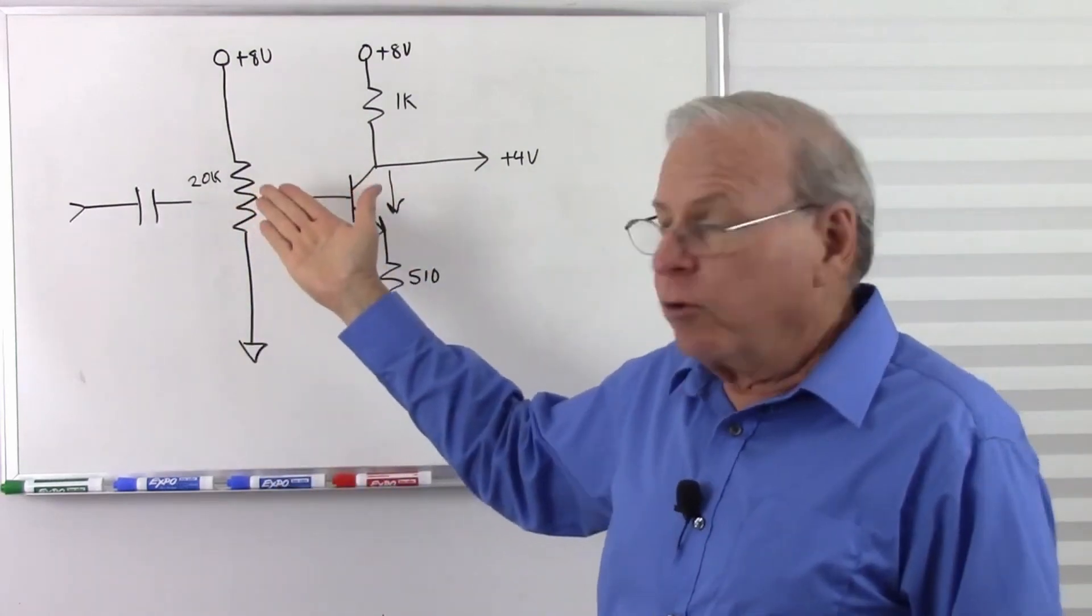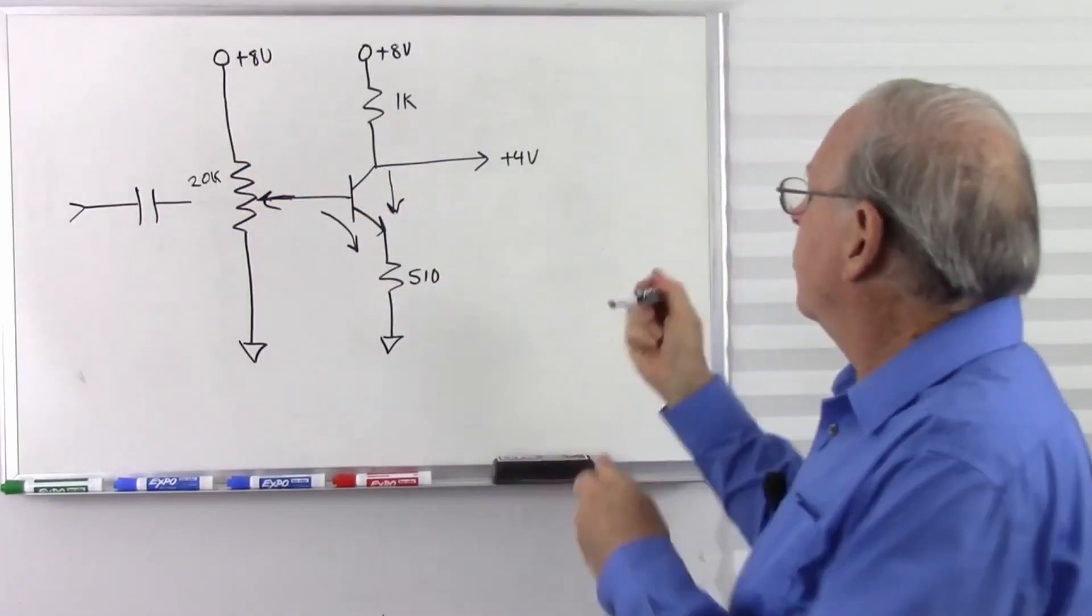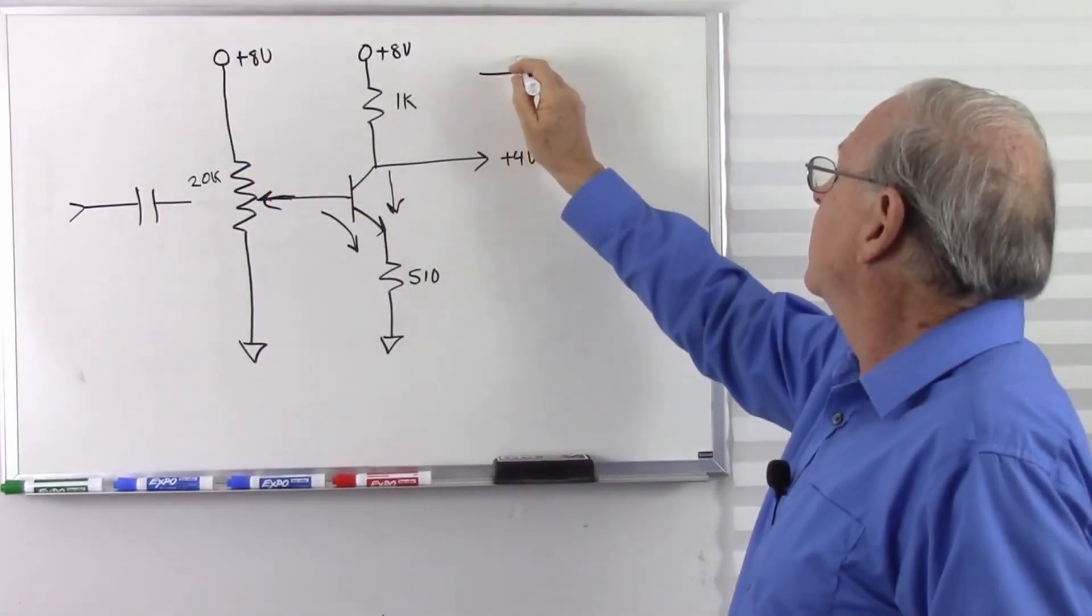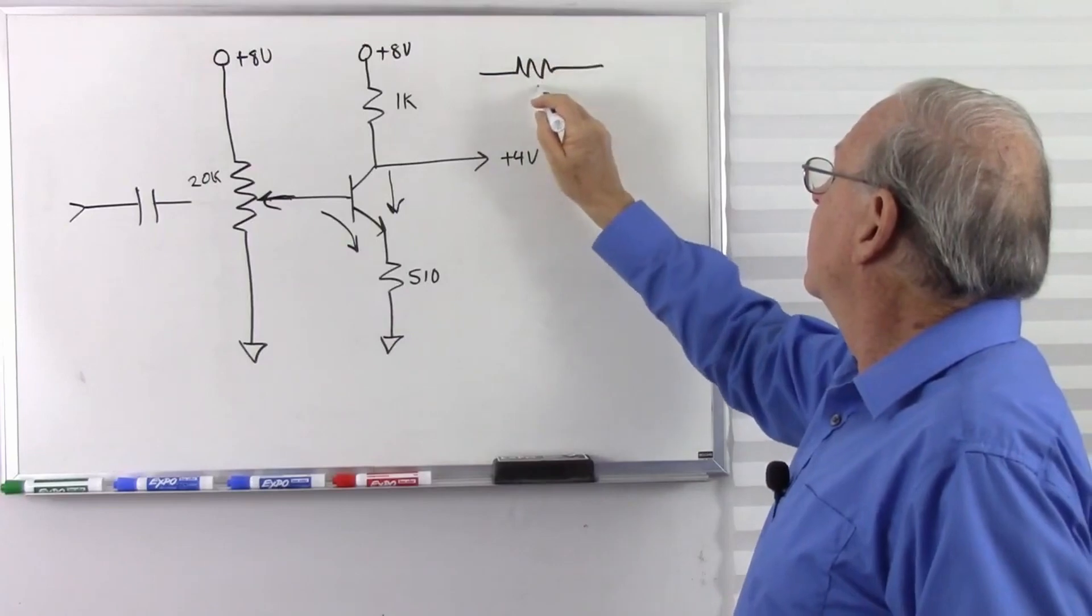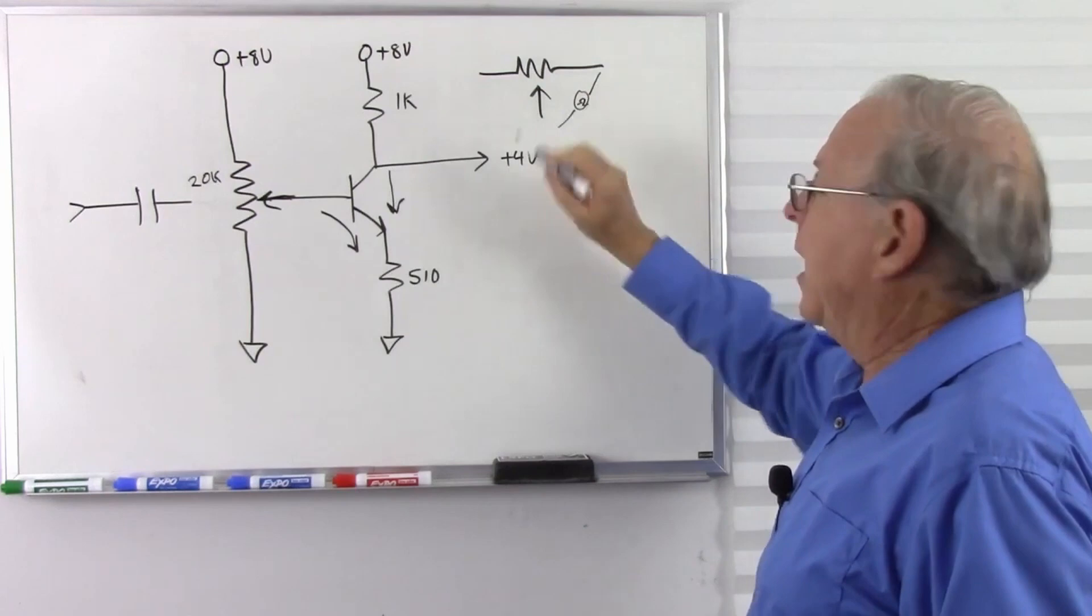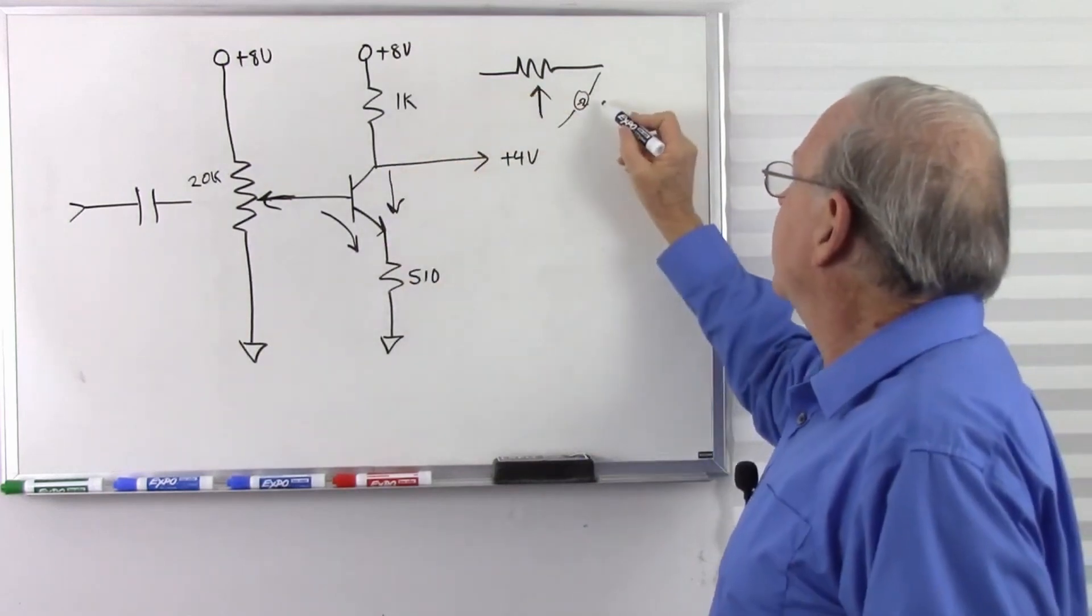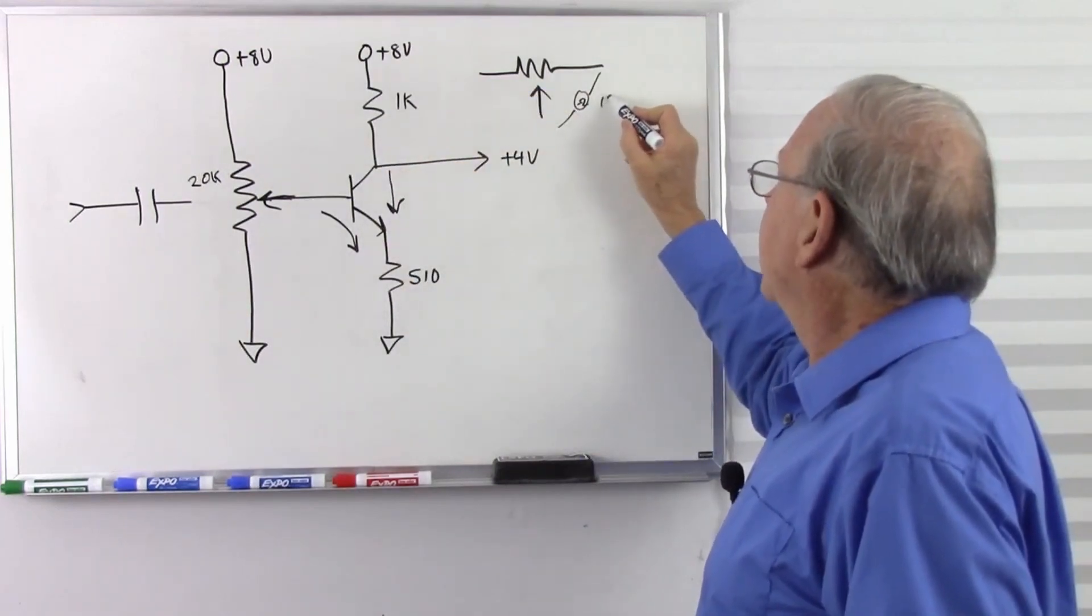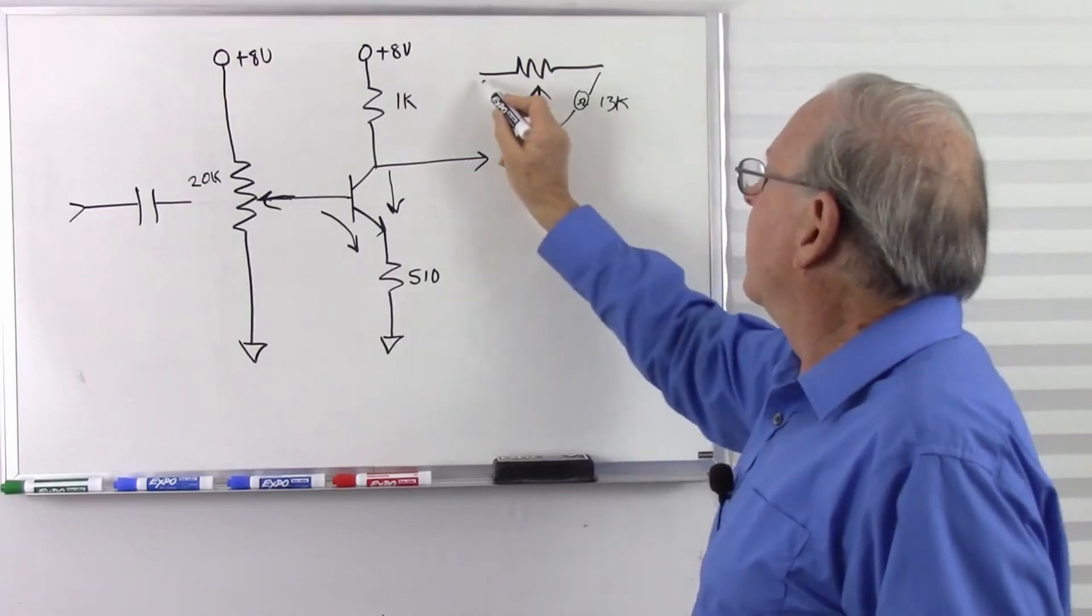So I pulled that out of the circuit and I put an ohmmeter here and measured that and I came up with 13k.